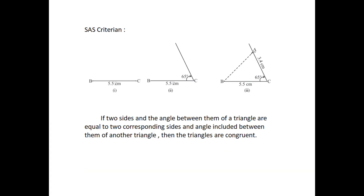Next, SAS criterion. Draw triangle ABC where the length of two sides are 5.5 cm and 3.4 cm, and the angle between these two sides is 65 degrees. First, draw the line segment BC of length 5.5 cm and make 65 degrees at C. A must be 3.4 cm away from C along this angular line through C, so draw an arc of 3.4 cm with C as center. It cuts the 65 degree line at A. Now join AB and get triangle ABC. This criterion is called side-angle-side. That is, if under a correspondence, two sides and the angle included between them of a triangle are equal to two corresponding sides and the included angle of another triangle, then the triangles are concurrent.